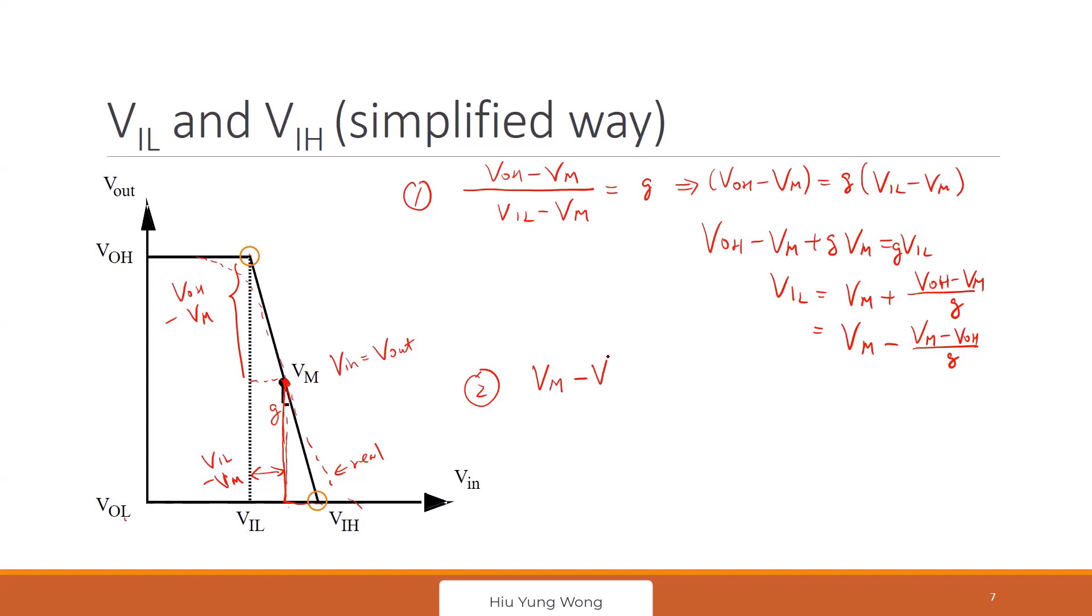Right, so instead of VOH, it's VOL, yeah, very good. And then? How do you find the slope? Should be VM minus VIH. Very good, exactly, yeah, thank you. I guess many of you know also, right? Then friends on me, right, for doing the great job and help me.